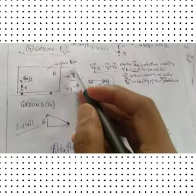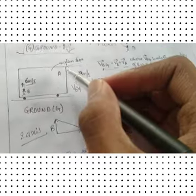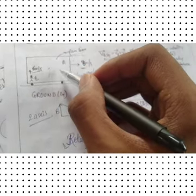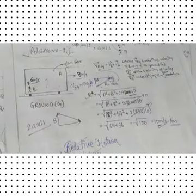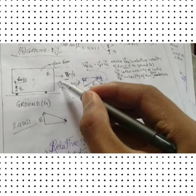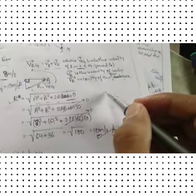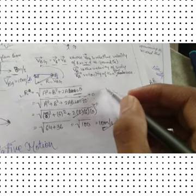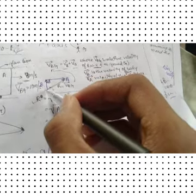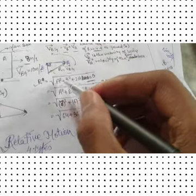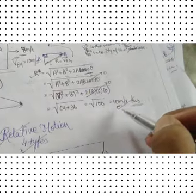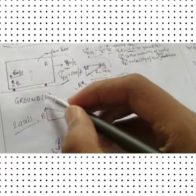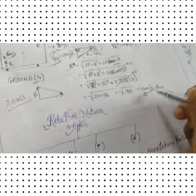Now the glass box example: a person inside a glass box moves upward at 6 m/s and horizontally at 8 m/s. Since we now have two axes, we use vectors. The resultant velocity = √(A² + B² + 2AB cosθ) = 10 m/s. So the relative velocity of the body with respect to the ground is 10 m/s.